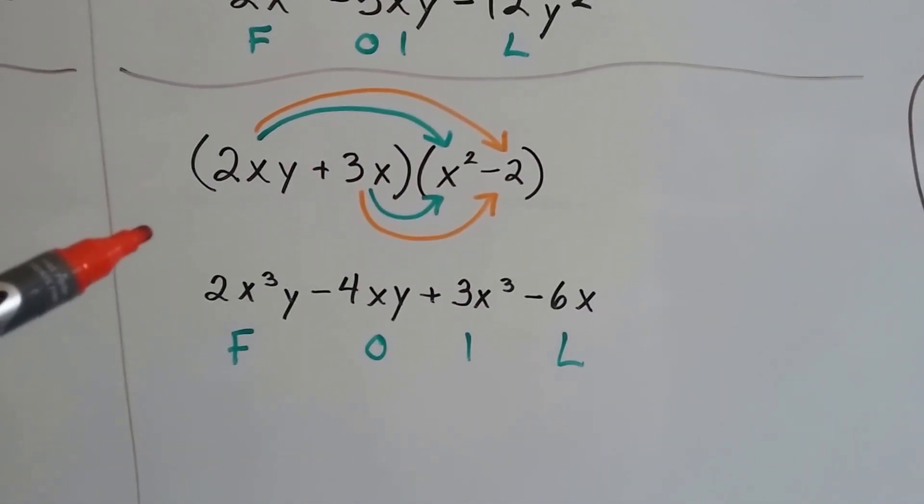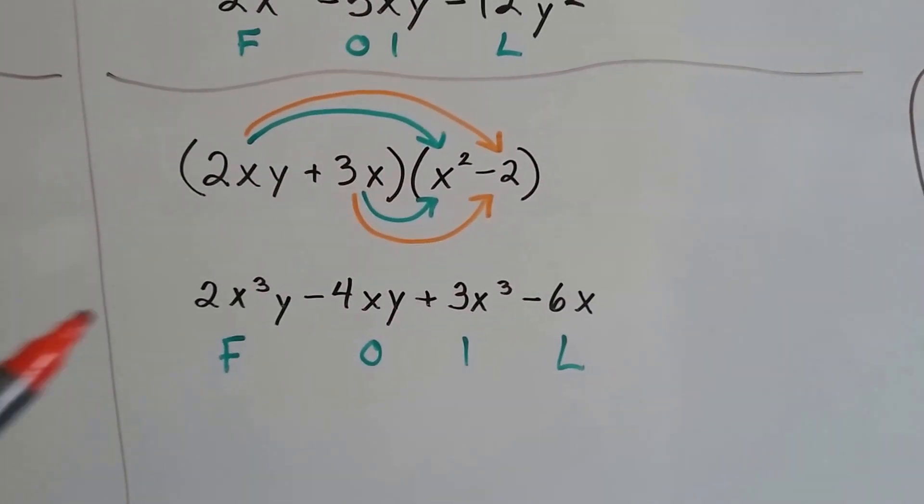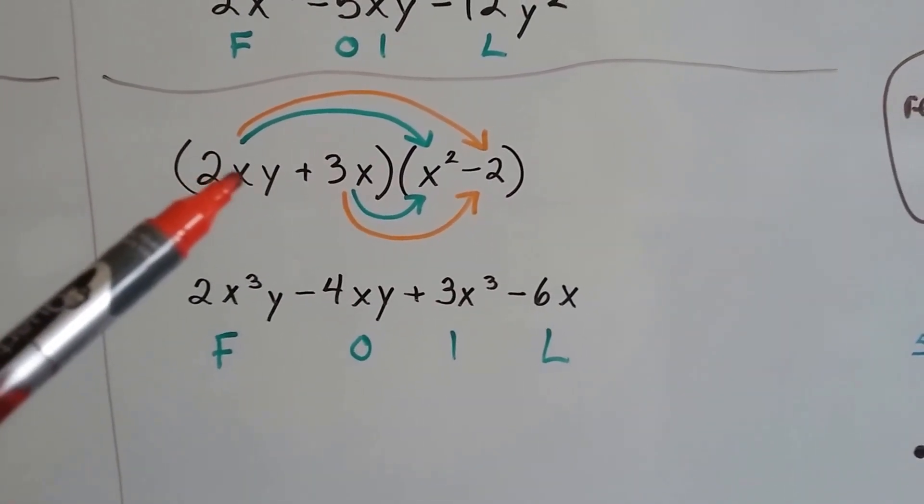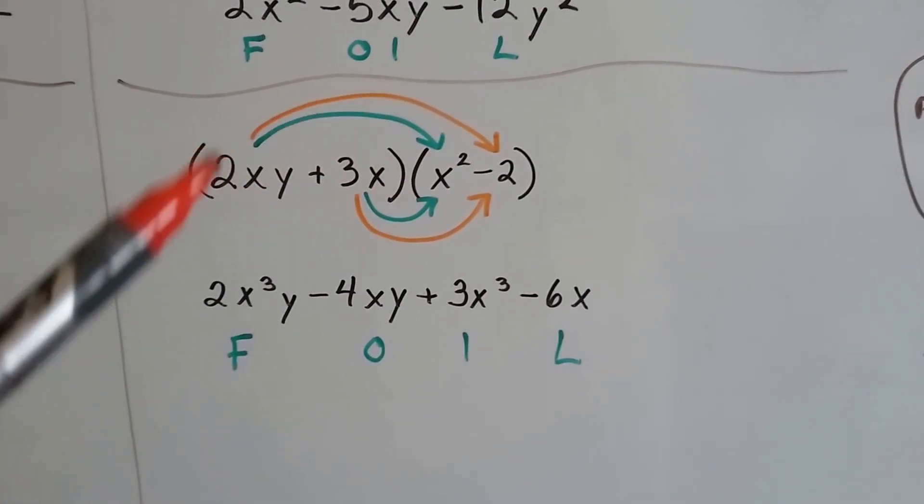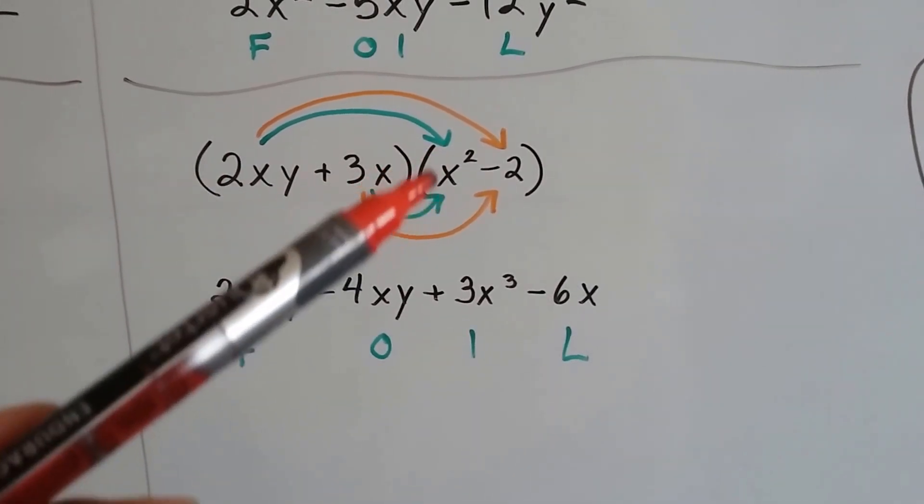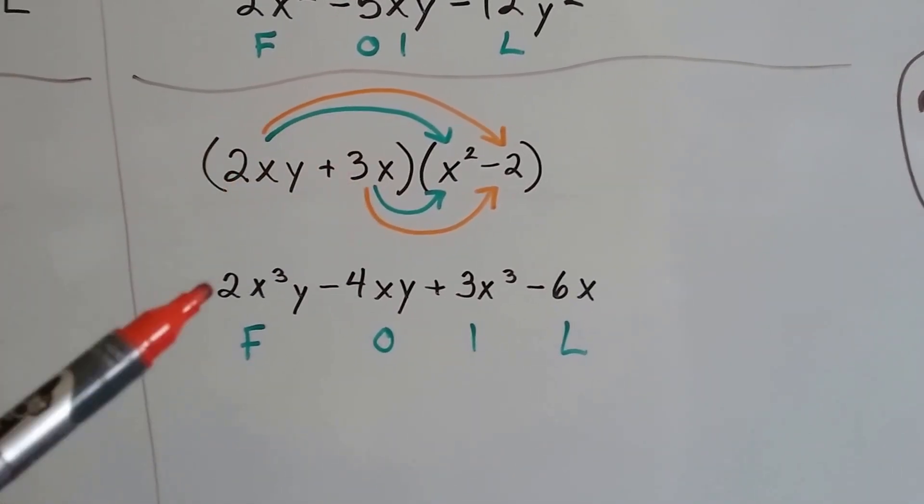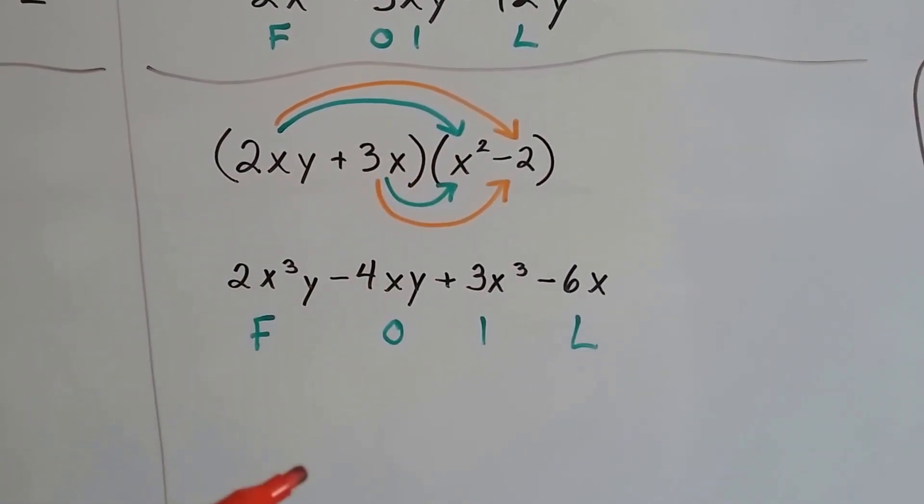We've got 2xy plus 3x times x squared minus 2. We're going to do the first ones. And there's a little one exponent here for this x and that one's got a 2 so we're going to end up with x to the third power. And there's an invisible 1 in front of this x so 2 times 1 is 2x to the third y. So we only have that one y because there wasn't one there.